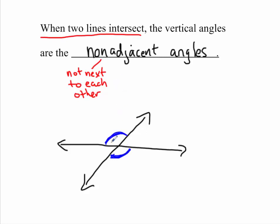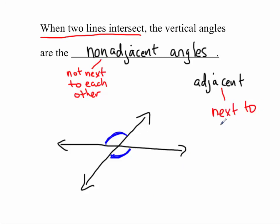So the correct answer for this, you should have non-adjacent angles. And if you were to look at the word adjacent — adjacent just means next to each other. So non-adjacent means not next to; adjacent would be actually next to each other.